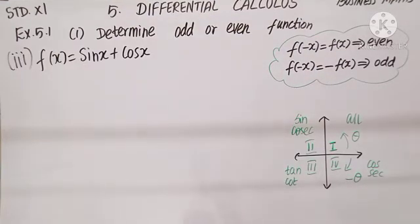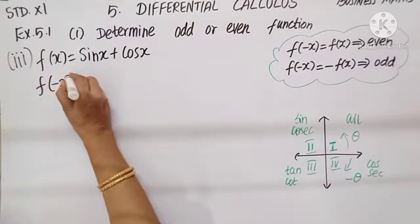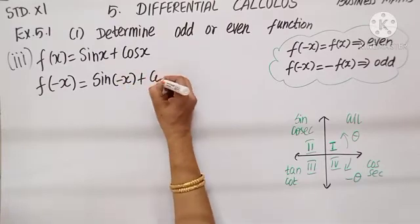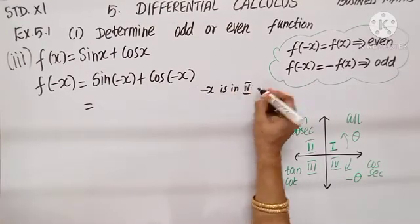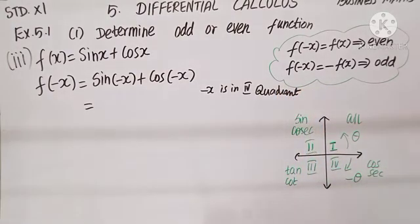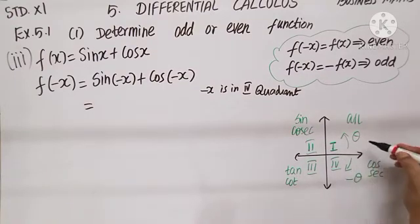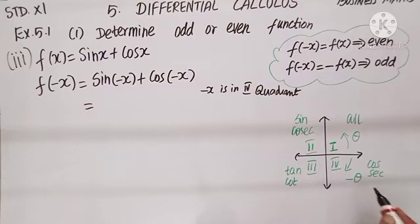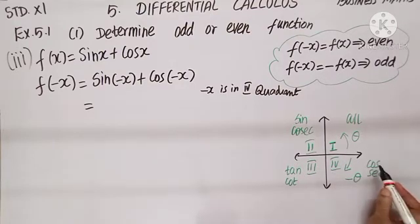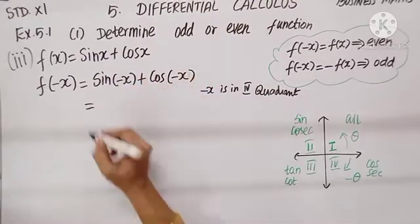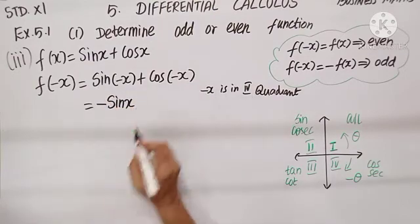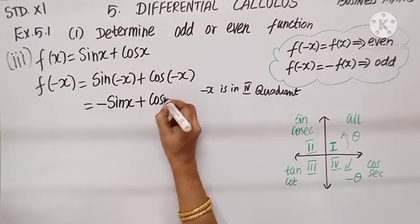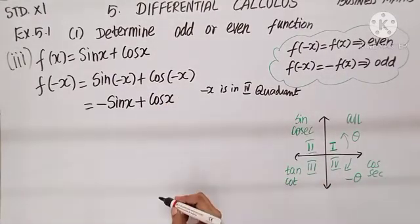Third subdivision: f(x) = sin x + cos x. So f(-x) = sin(-x) + cos(-x). Where is minus x? Minus x is in the fourth quadrant. Remember the quadrant rule from trigonometry: if we go anticlockwise it is plus theta where all ratios are positive; if we go clockwise it is minus theta. In the fourth quadrant, only cosine and secant are positive. So sin(-x) becomes minus sin x, because sine is negative in the fourth quadrant. But cos(-x) is just cos x, as cosine is positive there.